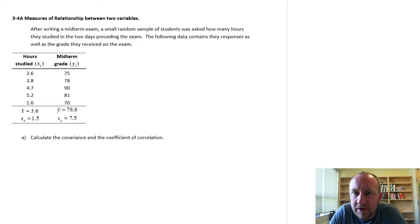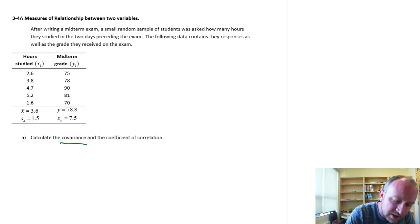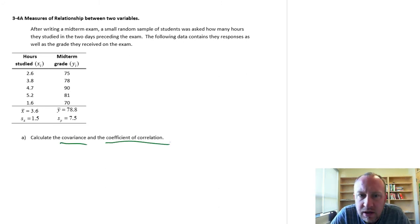Hello, so in this video we're going to look at measures of relationships between two variables. Particularly we're going to look at two that measure the strength or the degree of linear relationship: covariance and coefficient of correlation.